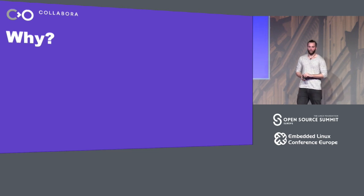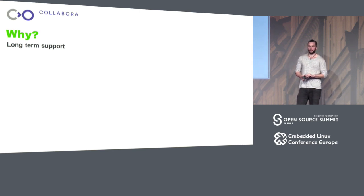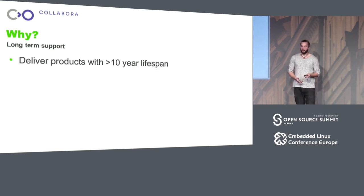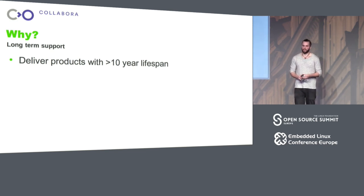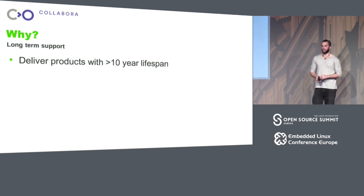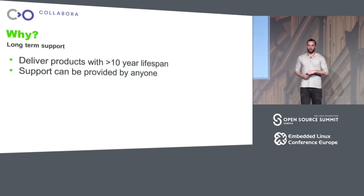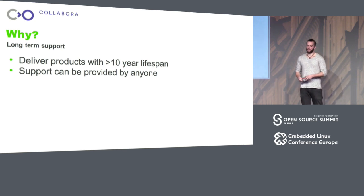So this is the last point of the talk: why does any of this matter? We use open source software not because it feels good, but because it is better — and a very specific point is long-term support. If you deliver a product, some products like embedded devices require serious long-term support. These devices aren't replaced every year or every fifth year, so hardware support has to be available for a very long time. 20 years of support is not unusual or unreasonable for some applications.